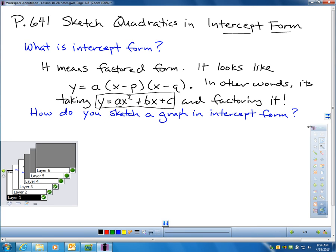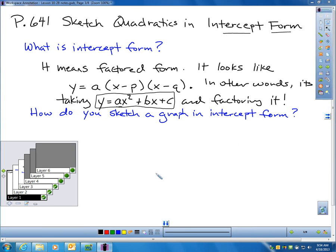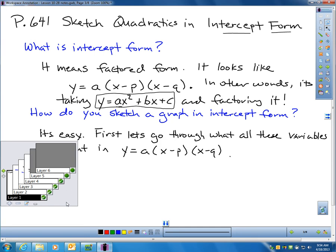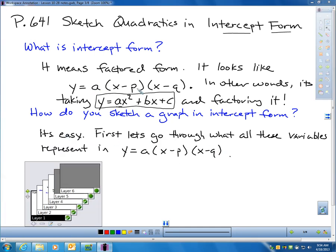How do you sketch a graph in intercept form? We just went through an example prior. We'll do some more here. To sketch it, let's get a couple basics down here first of what all these things mean. It's easy to do. Let's just make sure we go through what a, p, and q stand for in intercept form.